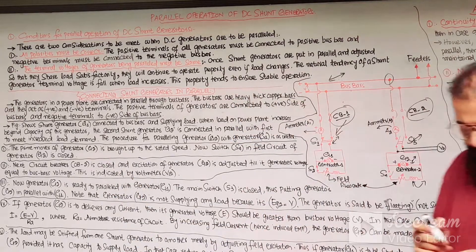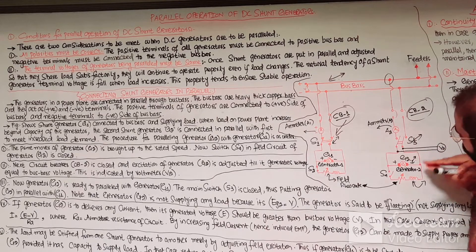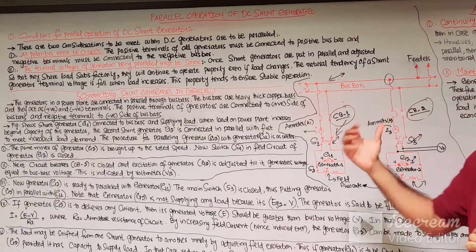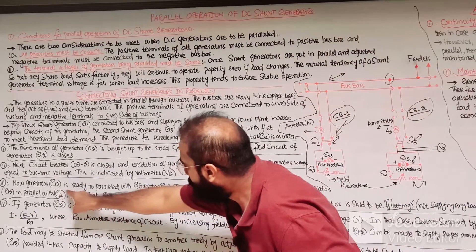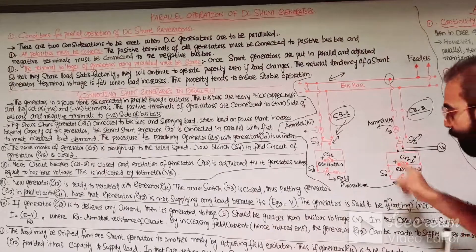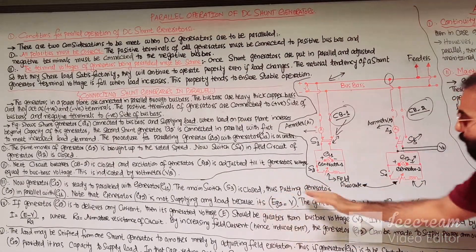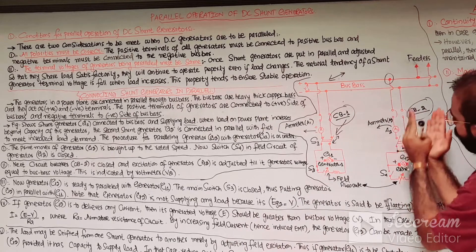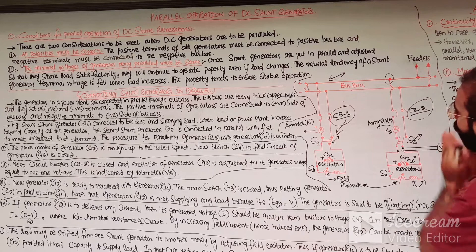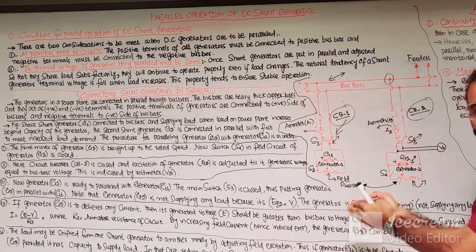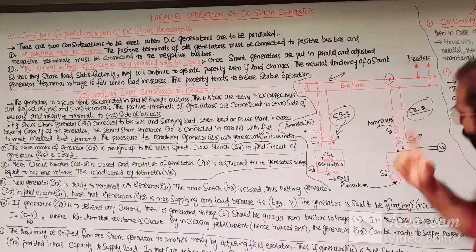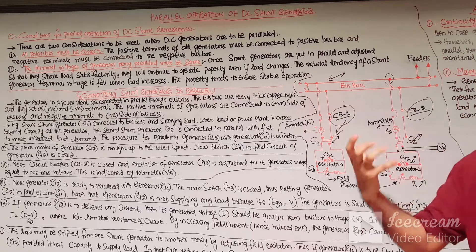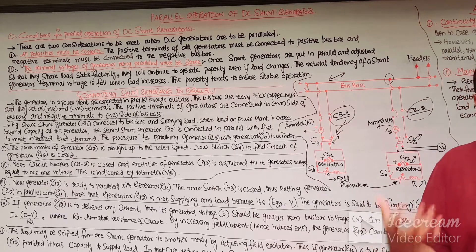The third step is that when the generated voltage of the G2 generator is equal to the bus bar voltage, G2 is ready to be connected in parallel with G1. Close the main switch S3, putting G2 in parallel with G1. When S3 is closed and the generated voltage of G2 equals the bus bar voltage, G2 is not supplying any load — this state is called the floating state.